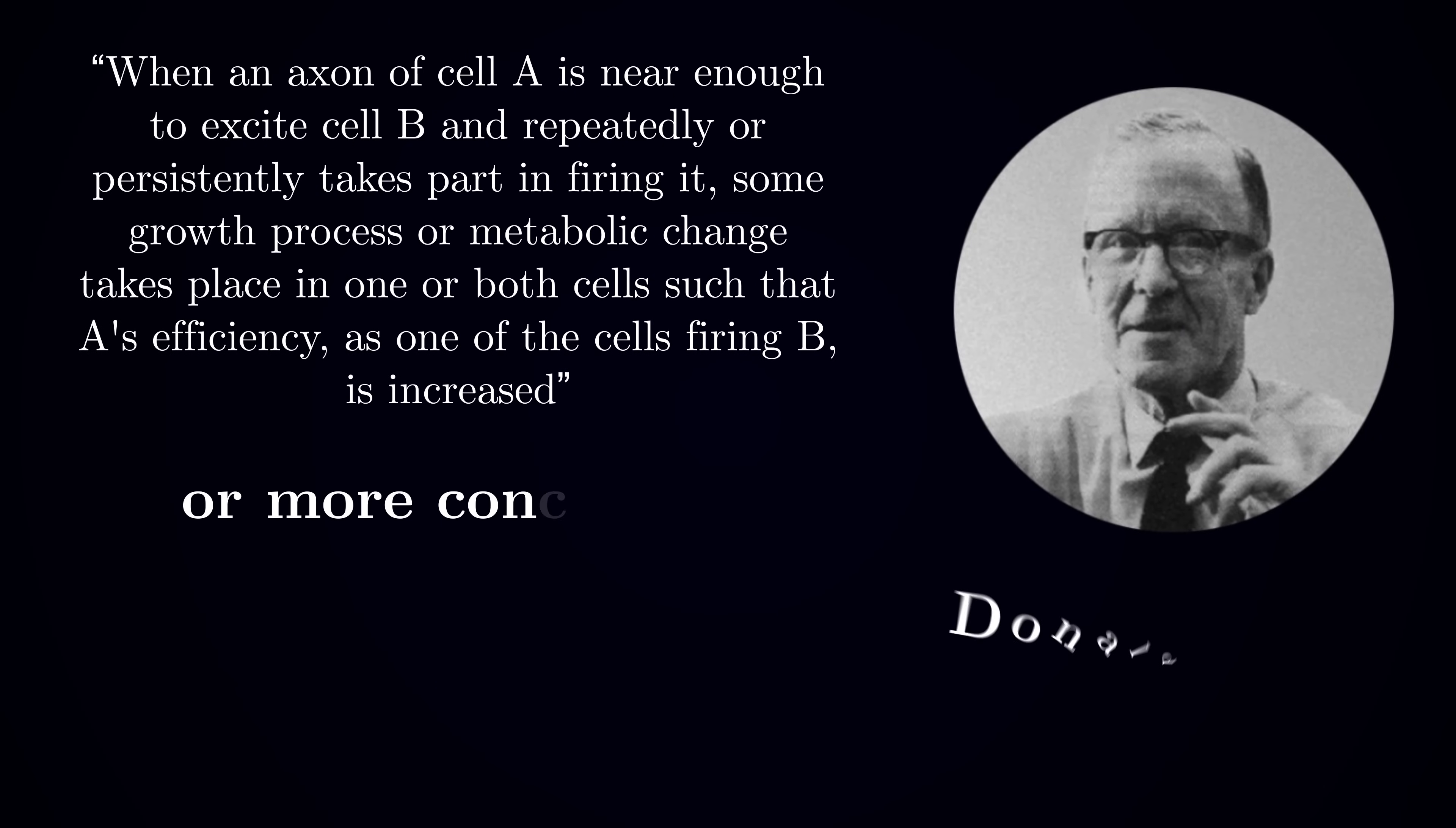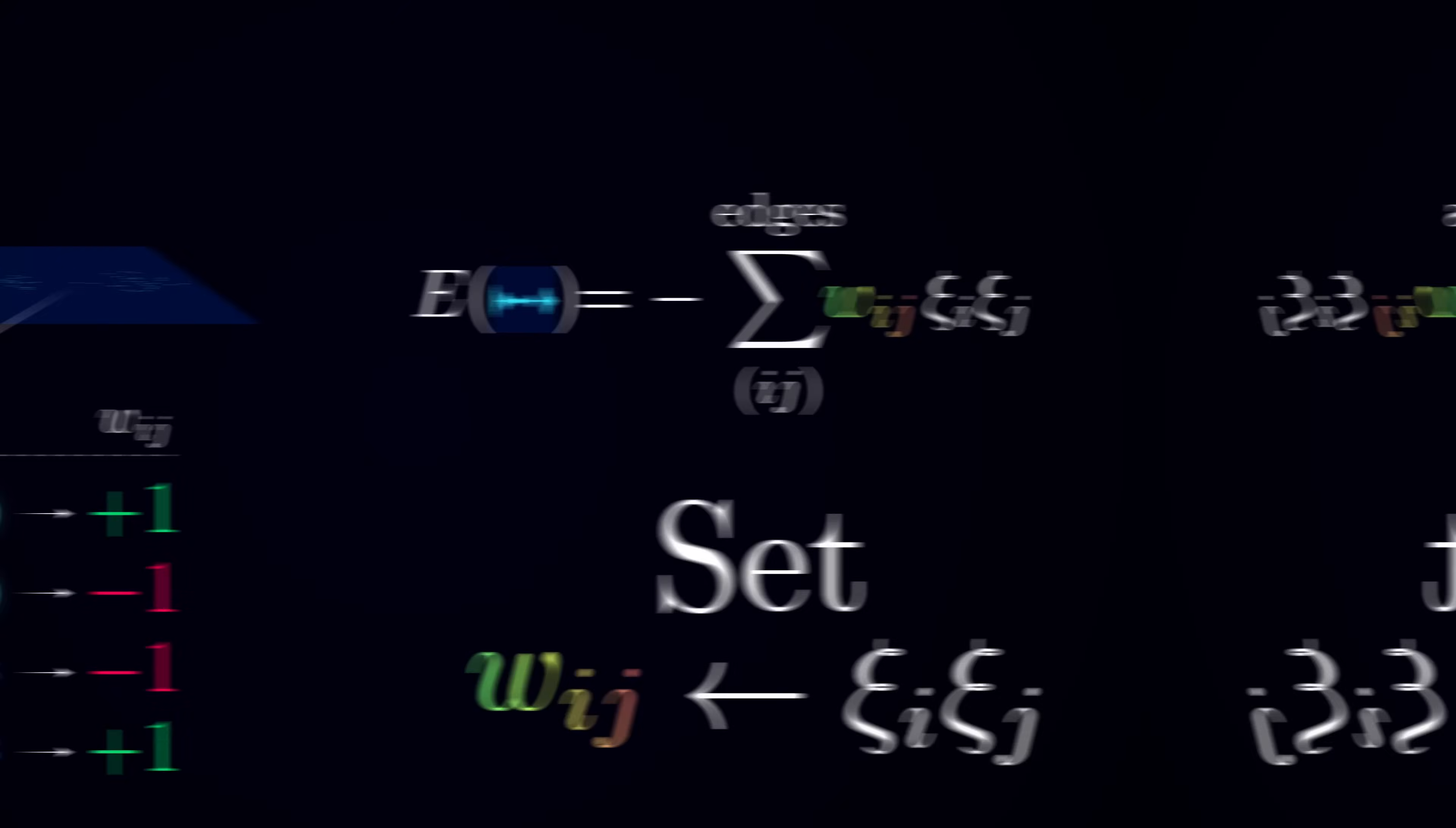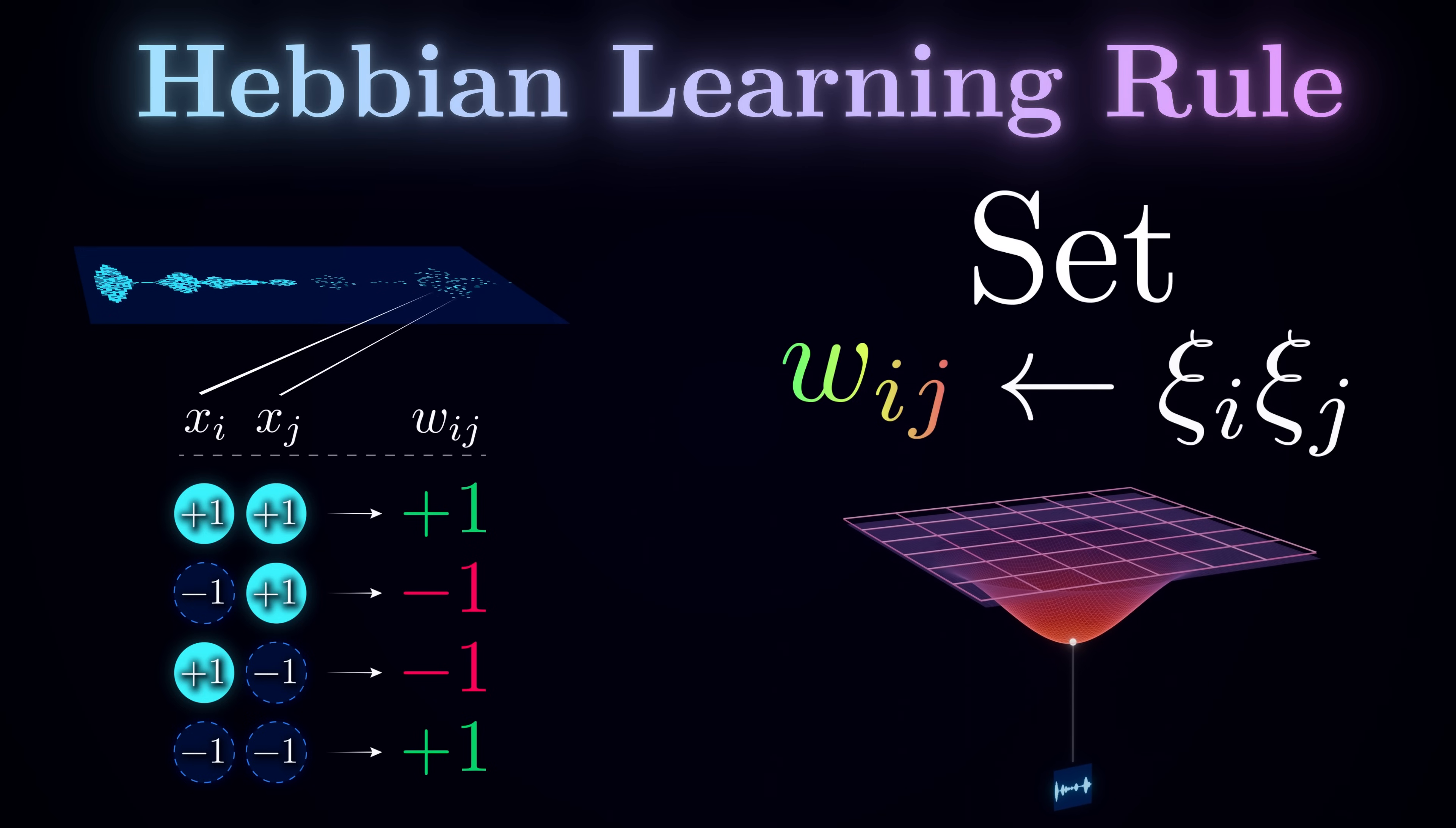You may have heard the famous statement from neuroscience attributed to Donald Hebb – neurons that fire together wire together. And in fact, what we just did is known as the Hebbian learning rule. Great, so we found a way to make a single pattern a stable state of the network. But we want to store multiple patterns. How do we do that?